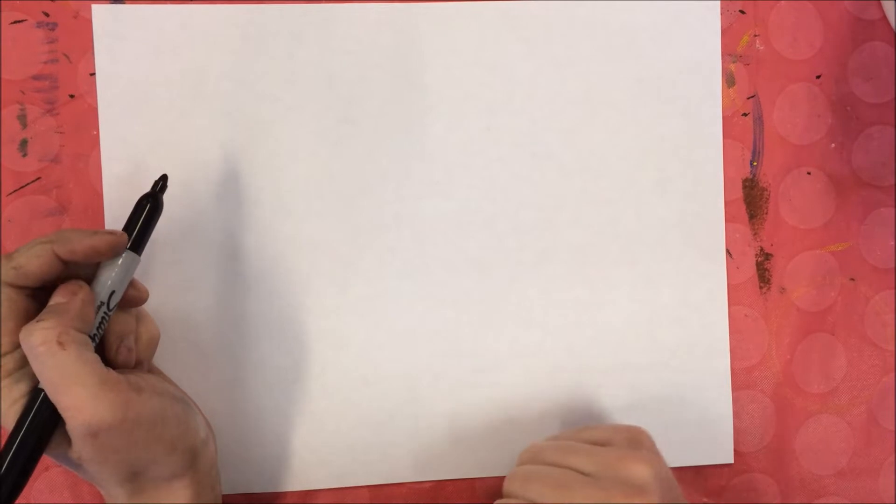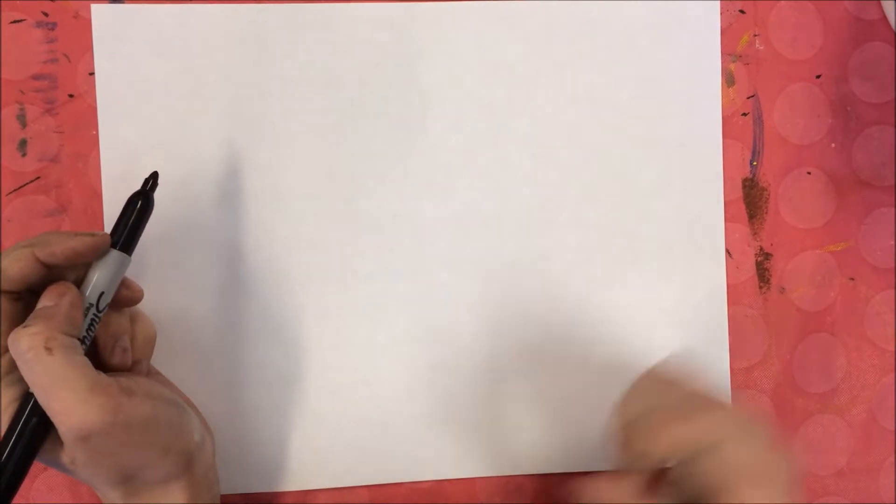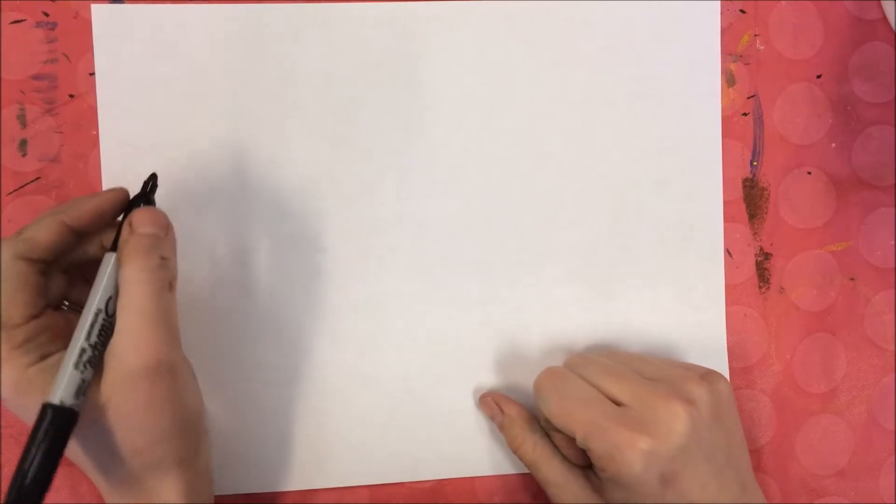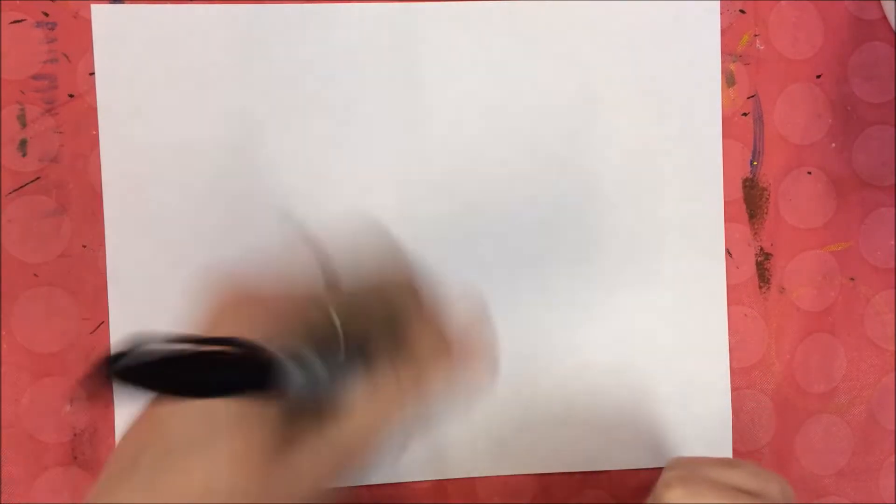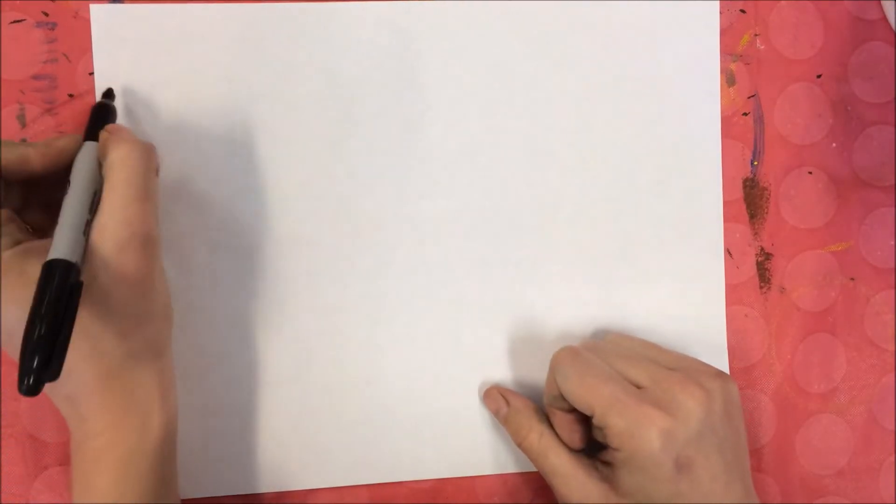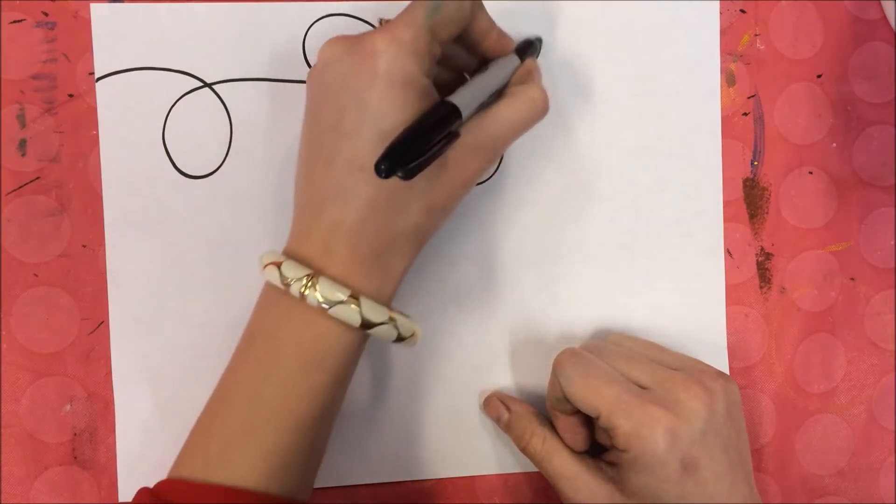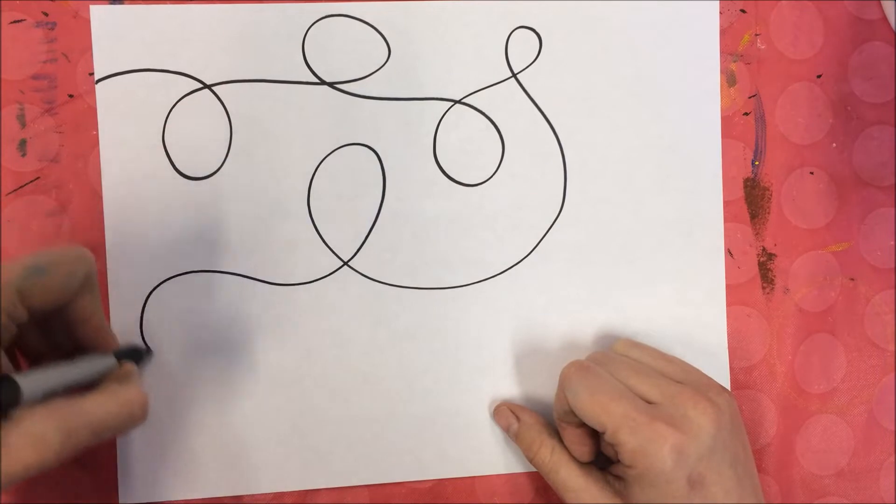But what you're going to start with, the only thing you're going to put on your paper first, of course put your name on the back, but you're going to put a looping line on your paper. Don't take your marker and just go crazy all over your paper. You want to think about your looping lines because every looping line is going to become a fish.